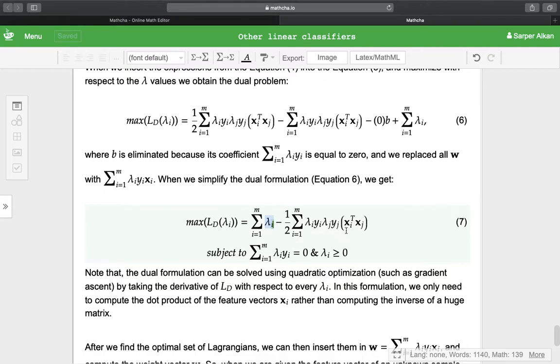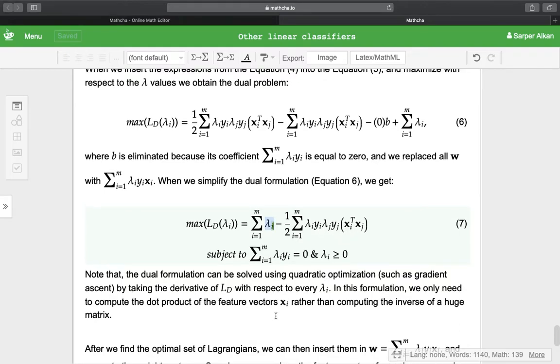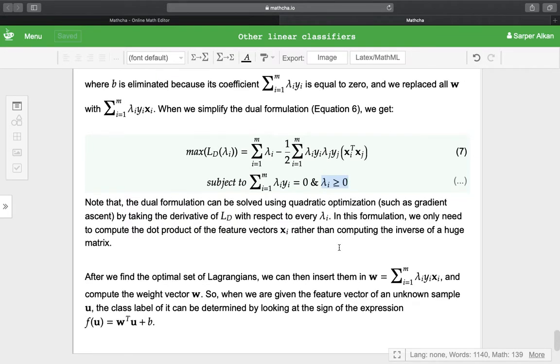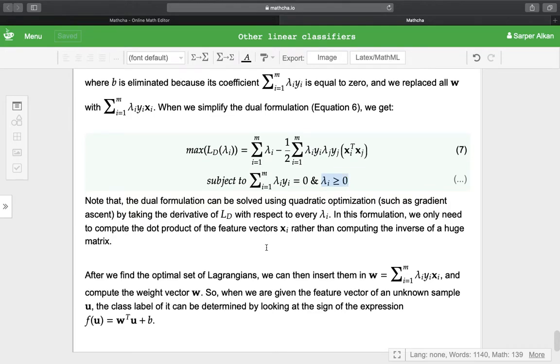This is subject to Σ λᵢyᵢ = 0 and λᵢ ≥ 0. Note that the dual formulation can be solved using quadratic optimization such as gradient ascent (not descent) because we want to maximize the function. We use gradient ascent by taking the derivative of L_D with respect to every λᵢ.